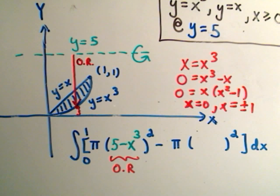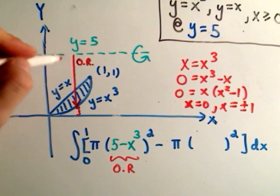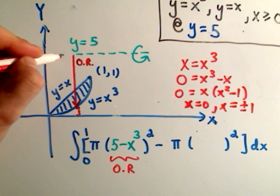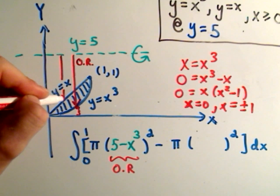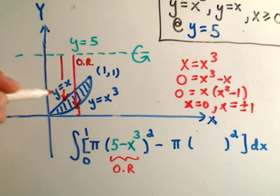And then my inner radius, I calculate that the same way. So I draw a line that's perpendicular. Okay, and it's just going to hit the region. But now it's going to hit the straight line part, which is the curve y equals x.